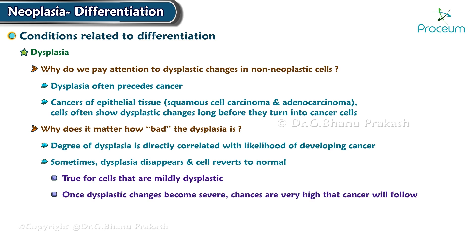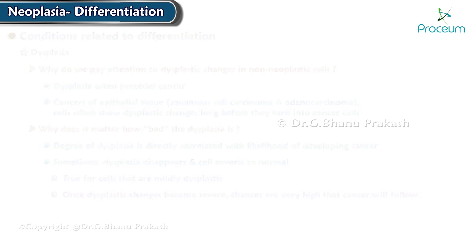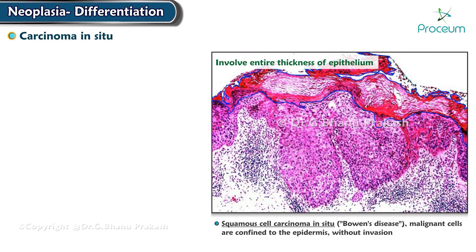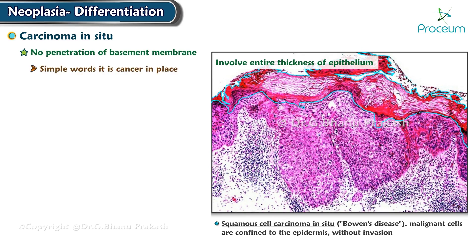Carcinoma in situ: when dysplastic changes involve the entire thickness of the epithelium but the lesion remains confined to the normal tissue and there is no penetration of the basement membrane, it is known as carcinoma in situ — or in simple words, cancer in place.